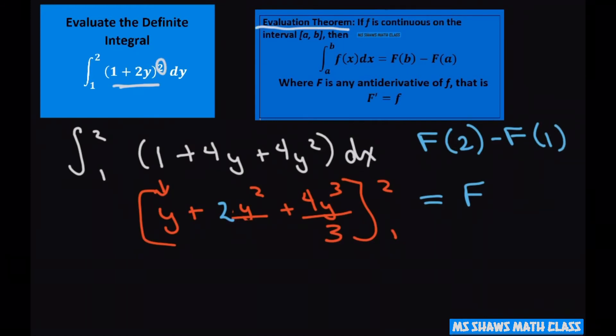So f of 2, you just plug in 2. You're going to get 2 plus 8 plus 32 divided by 3 minus,